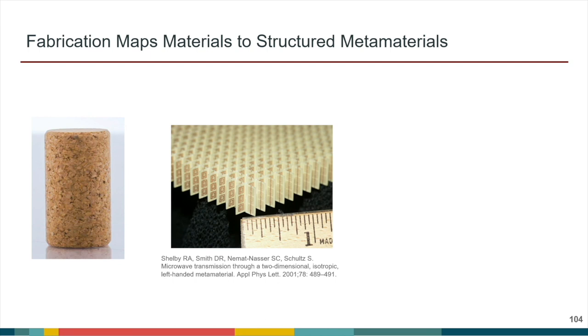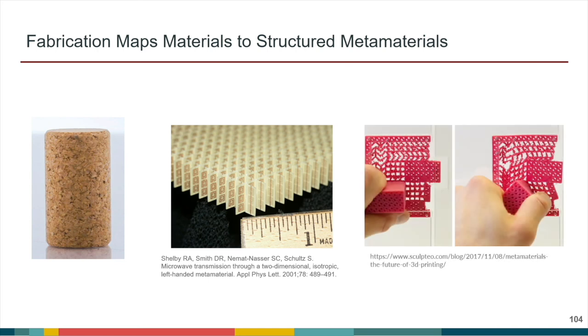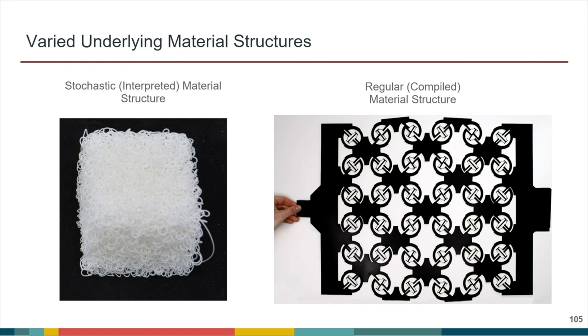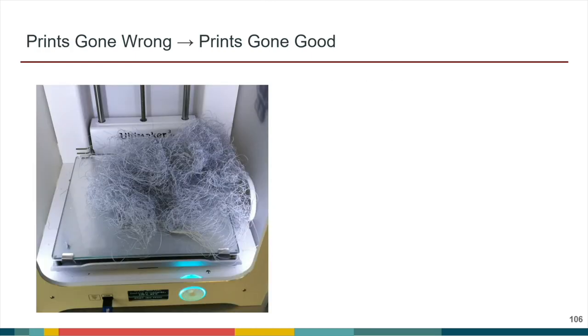I'm going to talk about two different aspects of my research: stochastic, or what I'm going to call interpreted material structure, as well as regular, or what I'm also going to call compiled material structures. Who here has actually 3D printed something and had this happen to them — a failed or messy print? Half of my research is actually dedicated to doing this in a controlled way. There's a physical phenomenon known as viscous thread instability: if you've ever put honey or syrup down on a surface, it kind of coils and loops on itself in a very unpredictable way. Depending on how fast you're moving your hand and how high your hand is off the plate, we're able to get different types of coiling phenomenon.